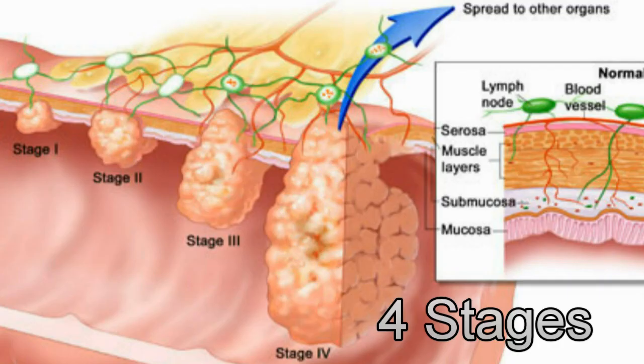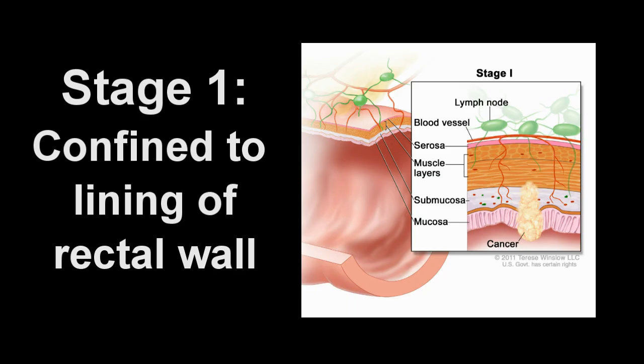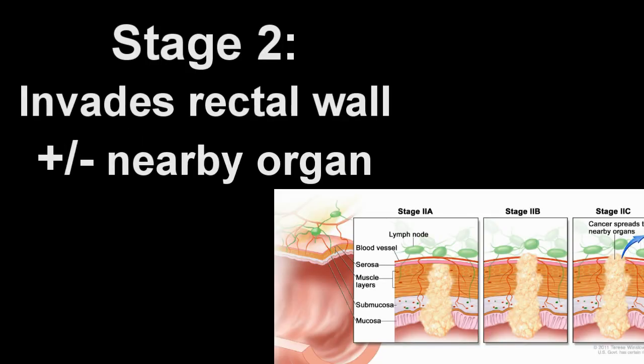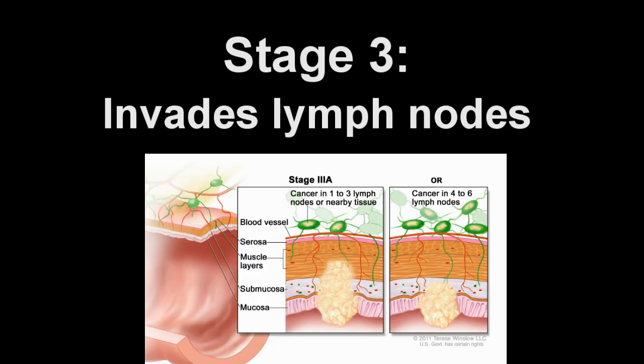There are four stages of rectal cancer. Rectal cancer is defined as stage 1 if the cancer tissue is confined to the lining of the rectum. In stage 2 cancer, the tissue has invaded the layers of the rectal wall and may have invaded nearby organs such as the bladder. In stage 3 rectal cancer, the cancer has spread to nearby lymph nodes, tiny bean-shaped glands of the lymphatic system.